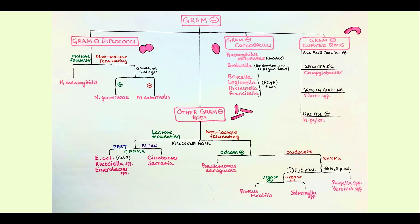We'll talk about the characteristics of N. meningitidis, and then we'll talk about a couple of diseases that are very high yield for all your steps. Here's our algorithm: we're talking about gram negative diplococci — these are just paired cocci together in little pairs. The first thing you want to ask is: does it ferment maltose? Neisseria meningitidis ferments maltose and glucose, whereas Neisseria gonorrhea does not ferment maltose — it only ferments glucose. There is one more, Moraxella catarrhalis, though it's not particularly high yield on your exam.